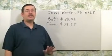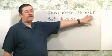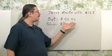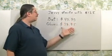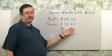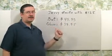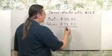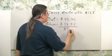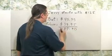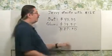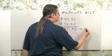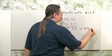We know that Jerry starts off with $125. He buys a bat for $45.95 and a glove for $39.95. So how much has he spent so far? Well, let's go ahead and add these up. We're going to get $85.90. But this is before tax.